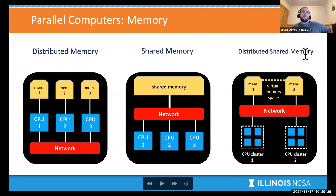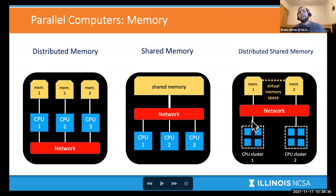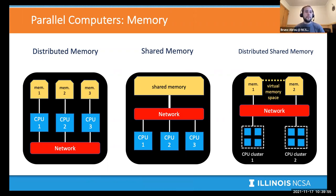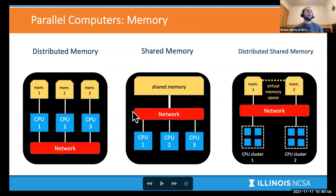The third model is a hybrid, which is not very common. It's a mix where CPUs clustered together have their own physical memory, but software virtualizes those separated memories so the user doesn't have to explicitly handle communication — though communication still happens transparently in the background. We'll be working primarily with the first two models in this parallel computing track.